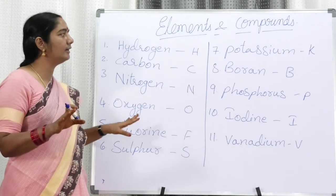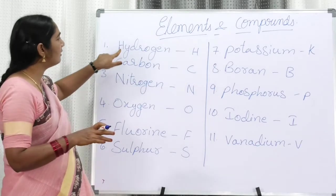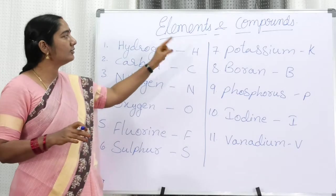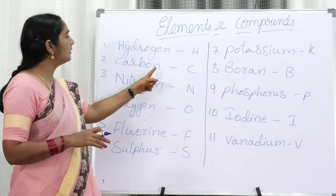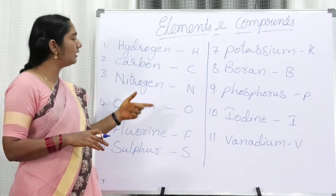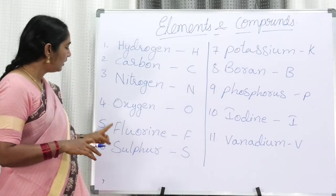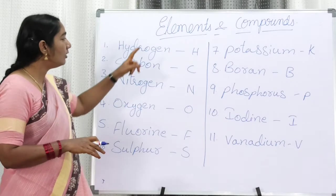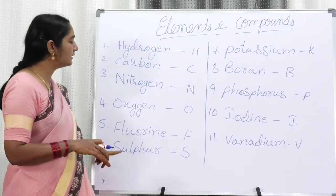Let us go through the symbols. Hydrogen — the symbol is H, the first alphabet. Carbon — the symbol is C, the first alphabet. Nitrogen — the symbol is N, the first alphabet. I request all students to please write these down and memorize them. Oxygen — the symbol is O. Fluorine — the symbol is F, the first alphabet. All these symbols must be written in capitals. Sulphur — the symbol is S. S is the symbol of sulphur — very important.